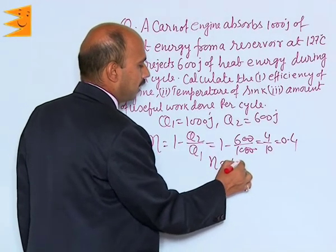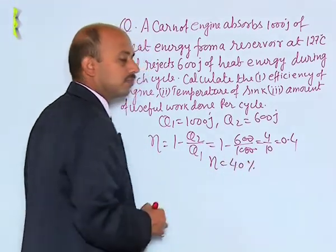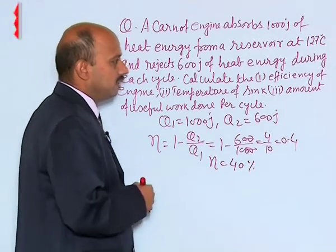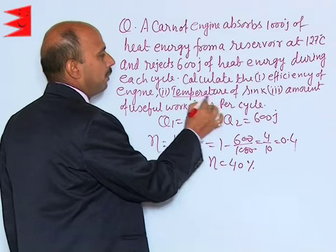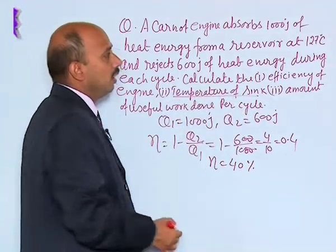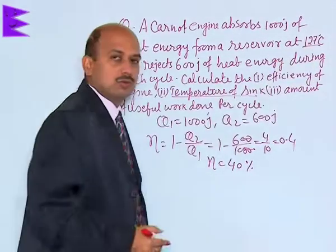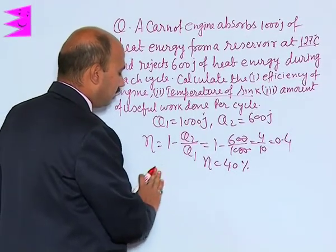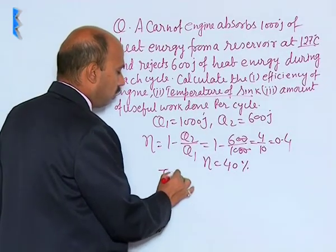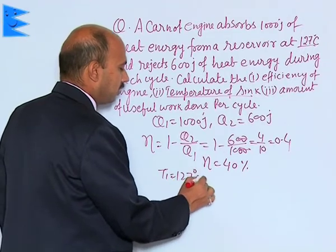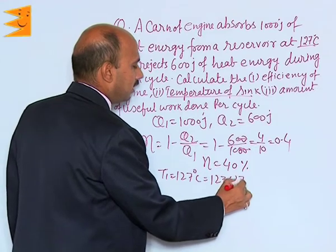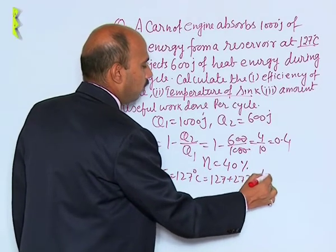Eta equals 40 percent, because efficiency is represented in percentage. Now the second part: what is the temperature of sink? You are given temperature of source. T1 is equal to 127 degree Celsius, which equals 127 plus 273 Kelvin, that is 400 Kelvin.